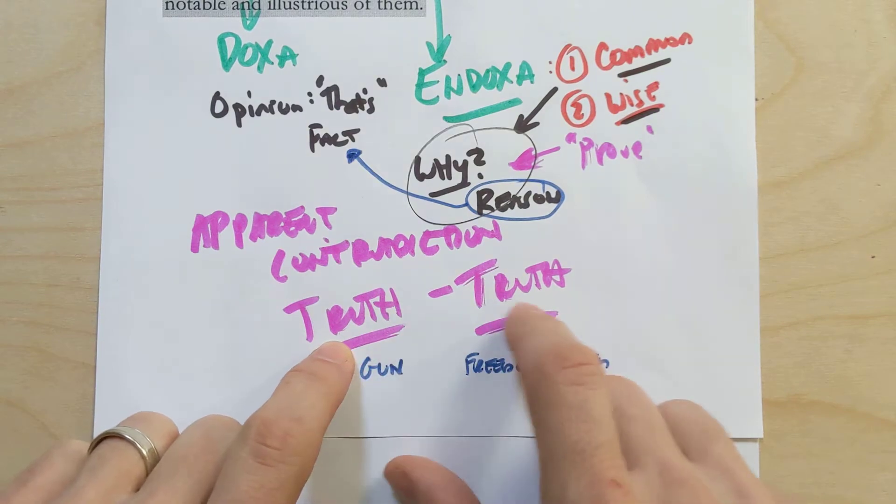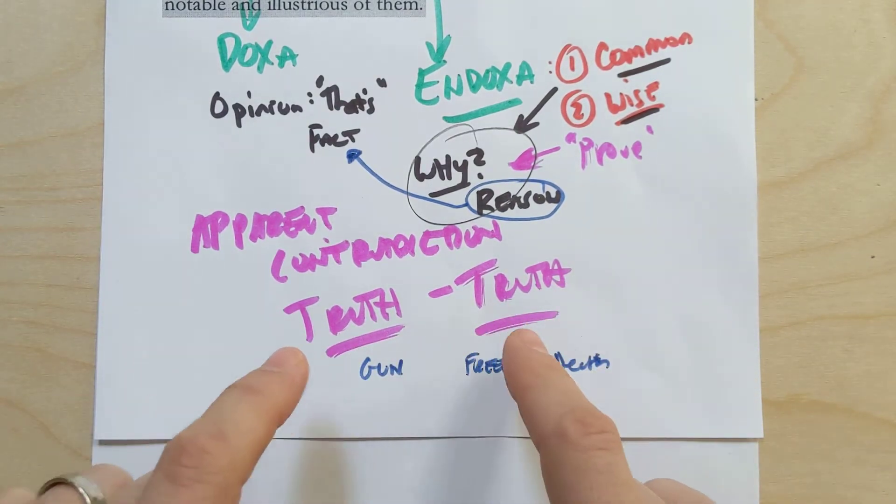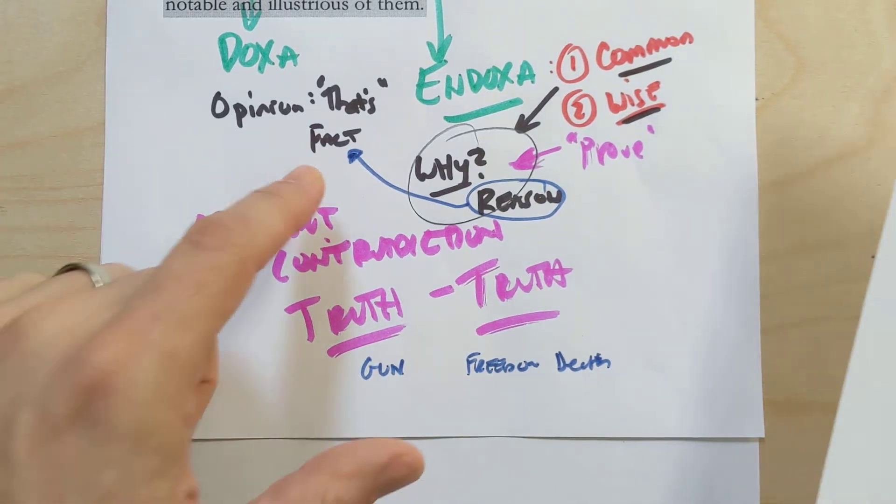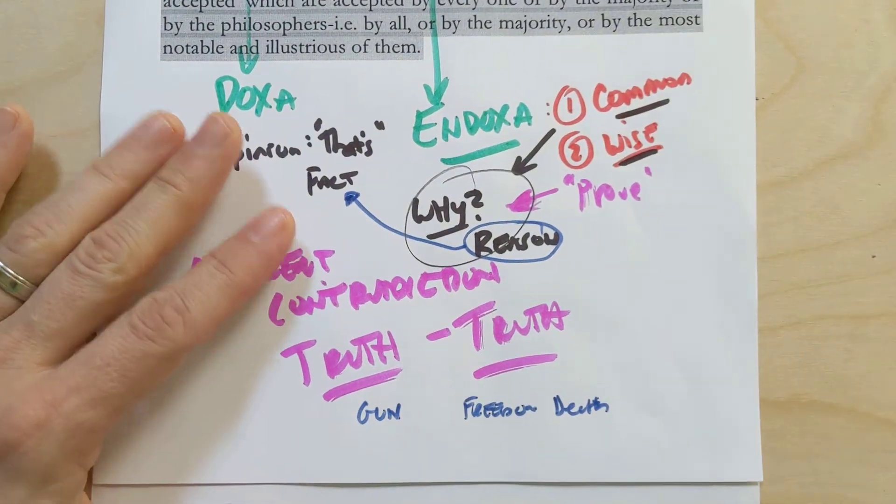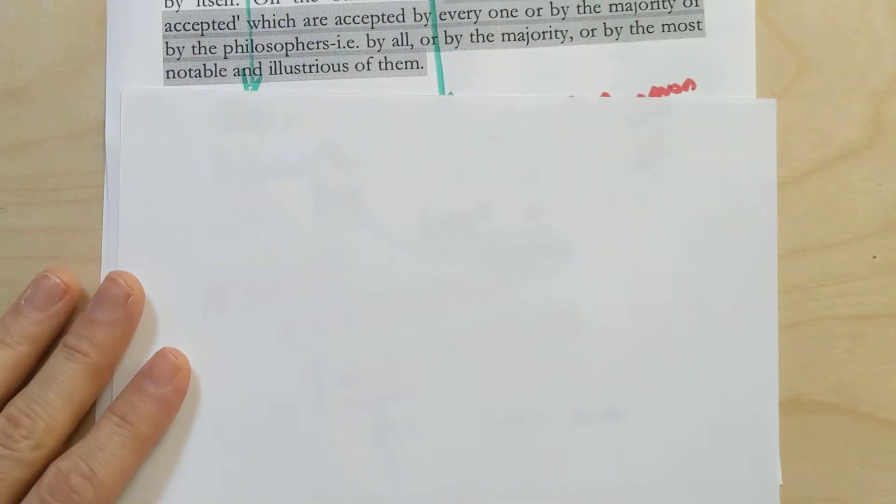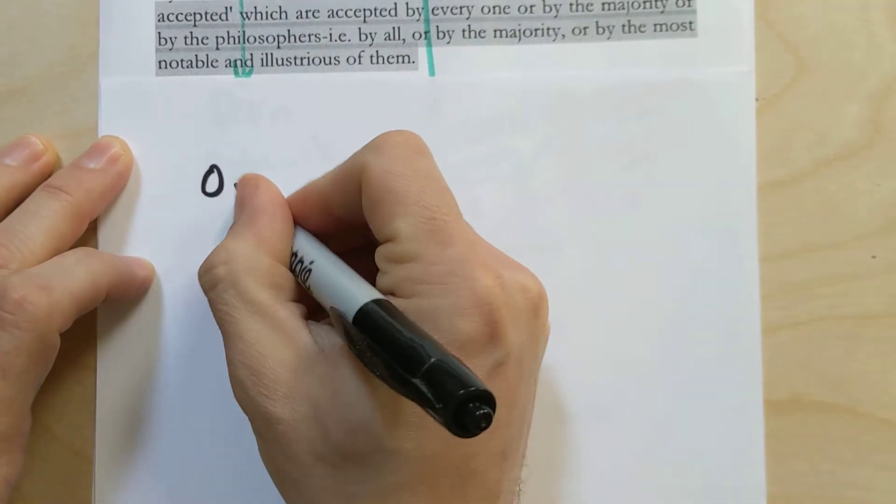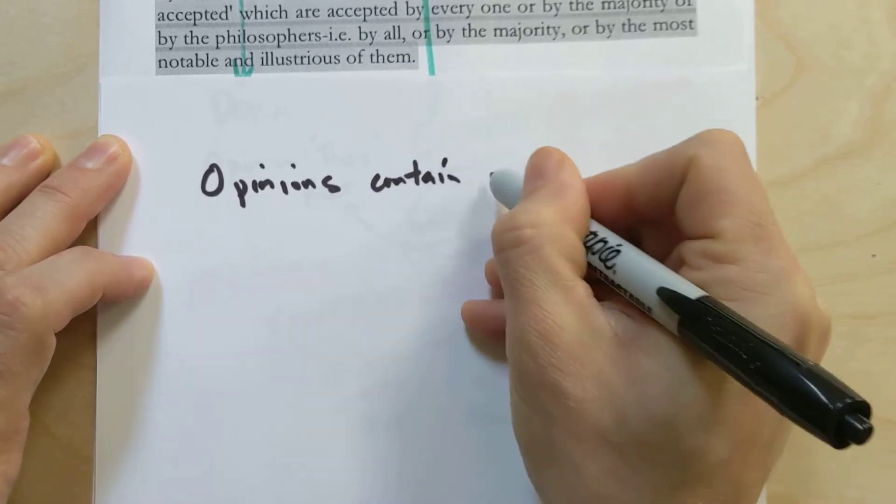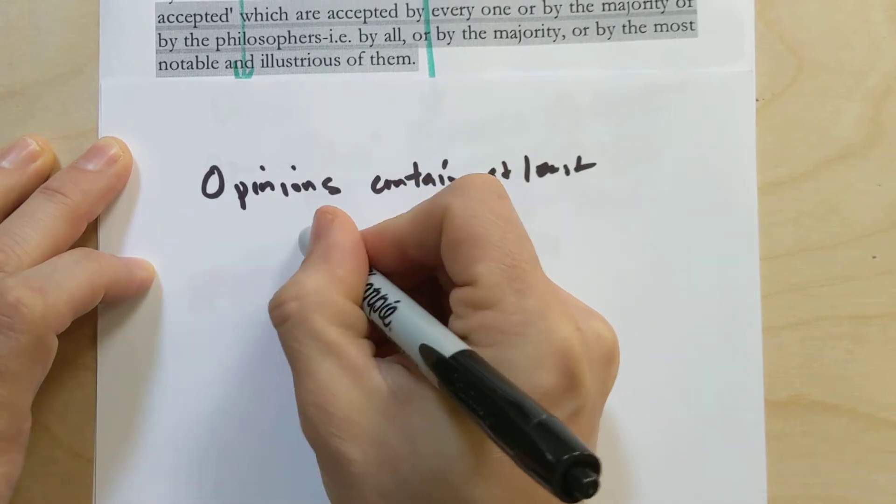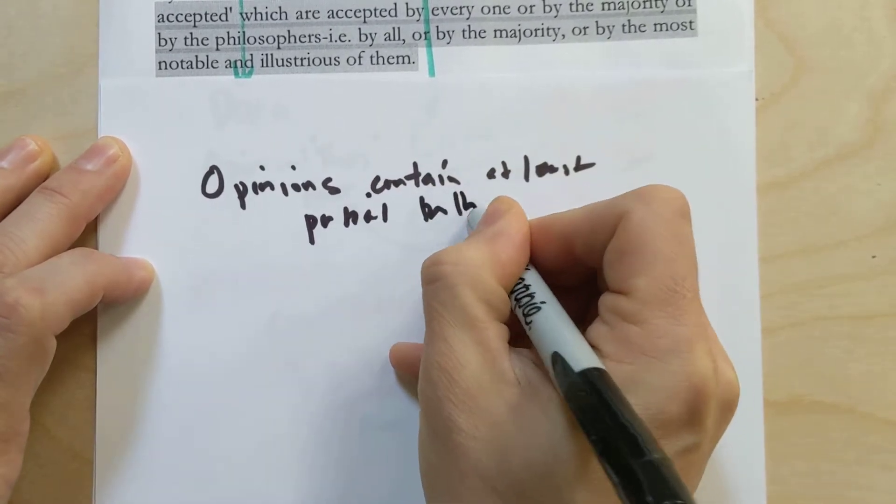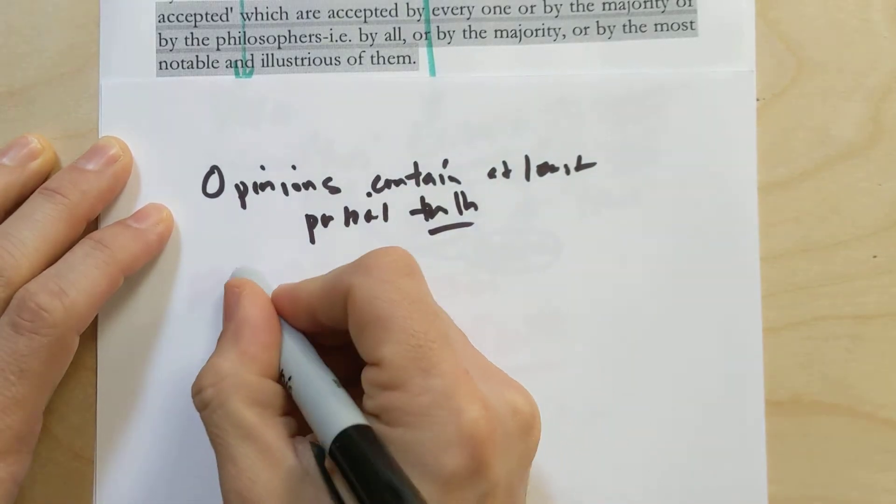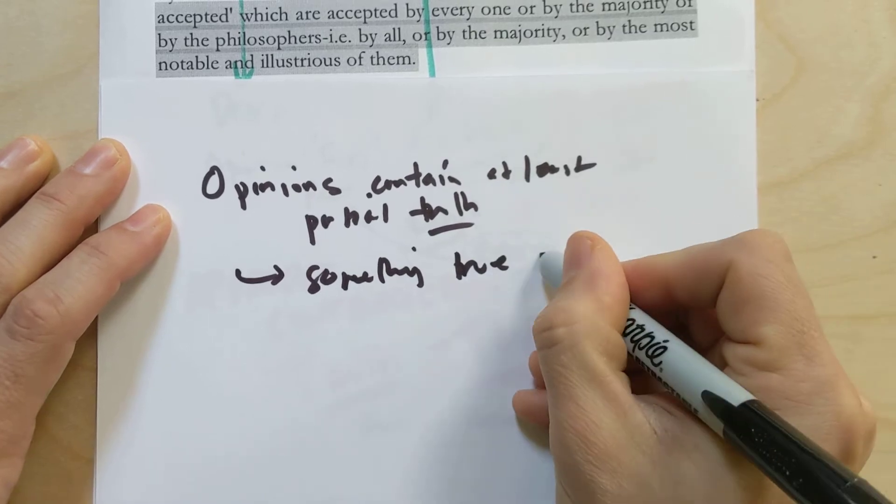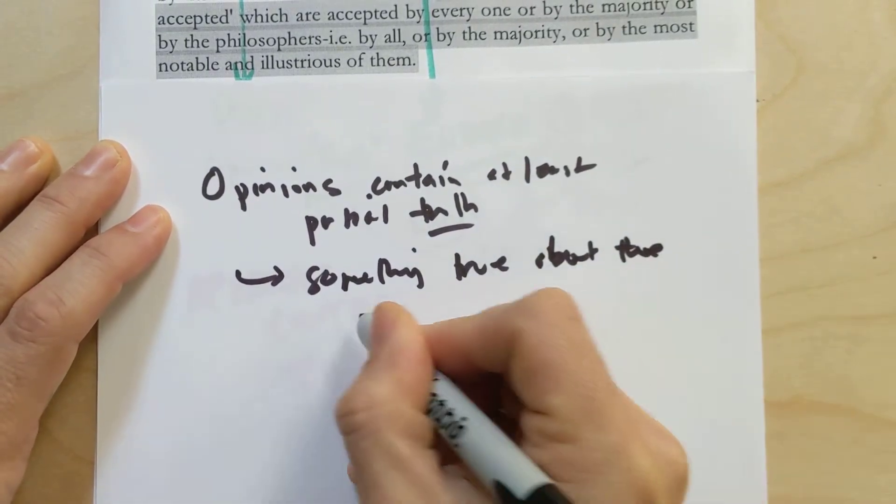Aristotle has this key idea that truth can't contradict truth. He would say that there's always some reason that someone would have some particular opinion. The core idea about any particular opinion is that all opinions contain at least partial truth. There's always something true about the opinion that made it that person's opinion.